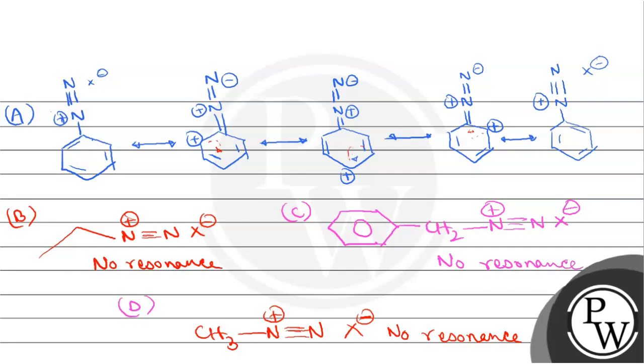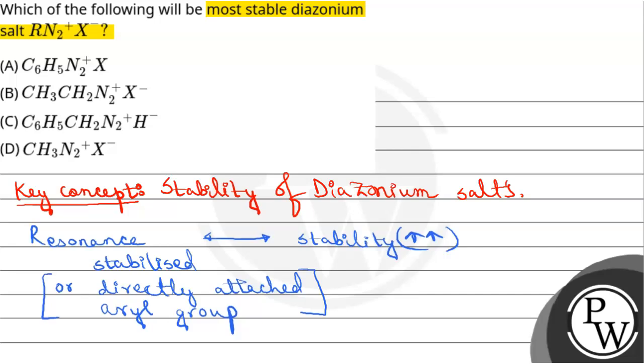So these are B, C, D. In each one, there is no resonance. So these are the three wrong options. So the final answer to this question is option number A. Hope you understood the solution well and best of luck.